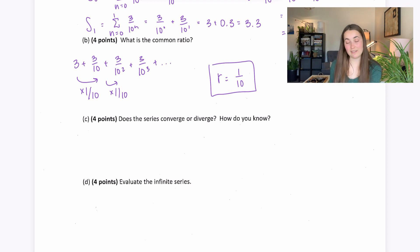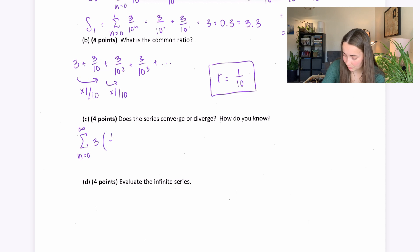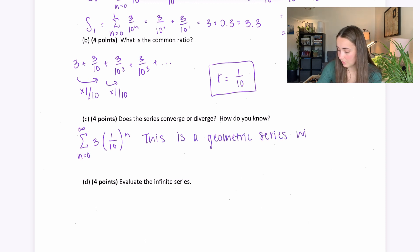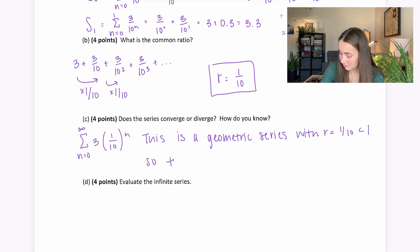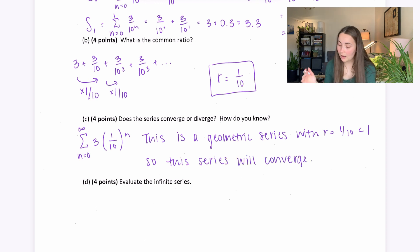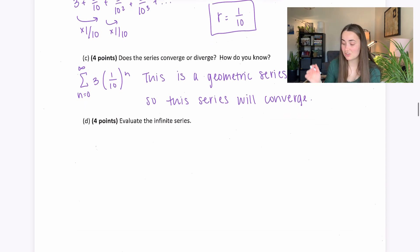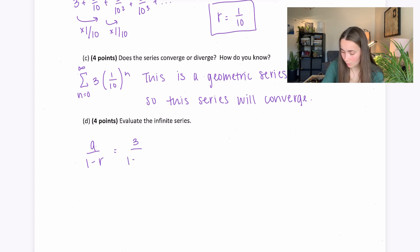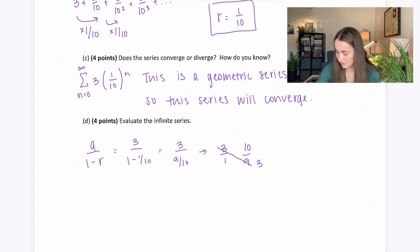Does the series converge or diverge? This is a geometric series with r = 1/10, which is strictly less than 1, so it converges. Since it converges, it equals a/(1-r): a=3, so 3/(1 - 1/10) = 3/(9/10) = 3 × 10/9 = 10/3. The series converges to 10/3.